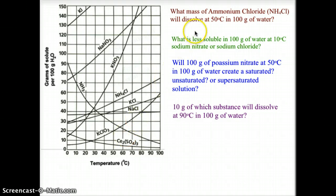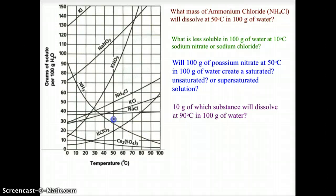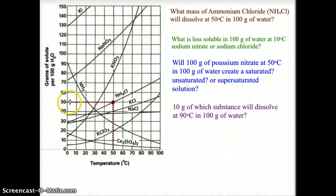The first question asks: what mass of ammonium chloride, NH4Cl, will dissolve at 50 degrees Celsius in 100 grams of water? We identify the 50 degree line, run it up to the NH4Cl curve, then read back to the y-axis. We find that 50 grams of solute will dissolve in 100 grams of water at 50 degrees Celsius using solid NH4Cl.